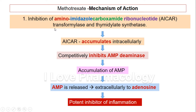The principal mechanism of methotrexate in rheumatoid arthritis is inhibition of the amino imidazole carboxamide ribonucleotide transformylase (AICAR transformylase) and thymidylate synthetase. By inhibiting the AICAR transformylase enzyme, it leads to the accumulation of AICAR intracellularly, which in turn competitively inhibits the activity of AMP-deaminase — that is, adenosine monophosphate deaminase.